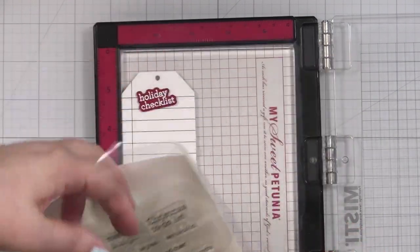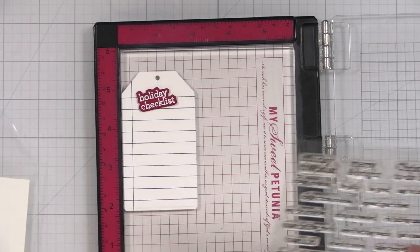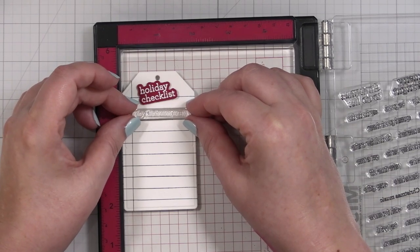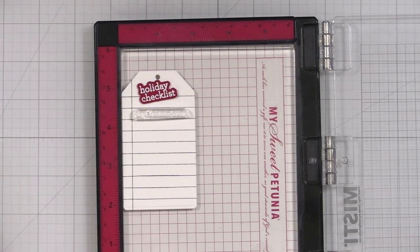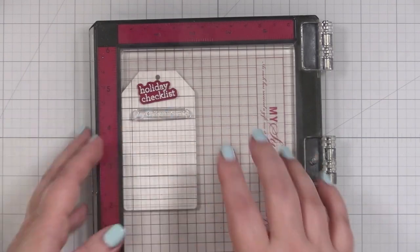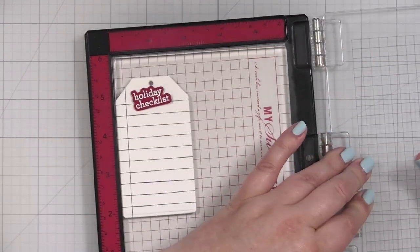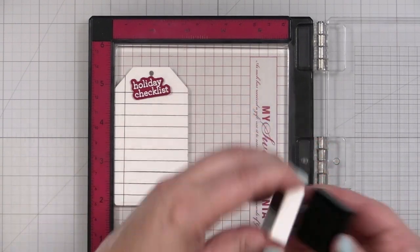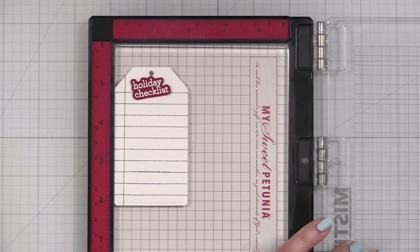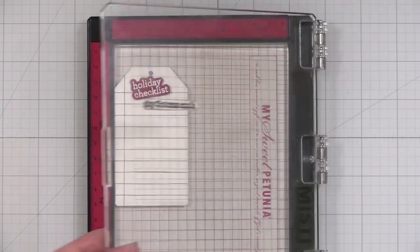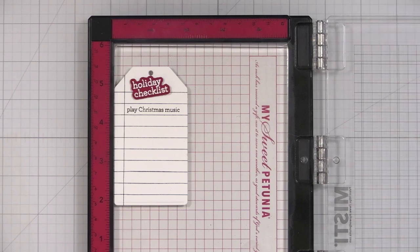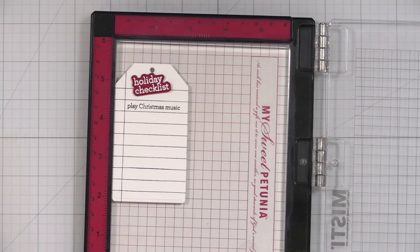I'm going to pick a few, pop them down, and we'll stamp them. So play Christmas music. Of course, it doesn't have to be perfect. I am going to use a smaller ink cube for this, just a little Gina K Designs cube, because this is a really delicate little type set. See that? Oh, so cute.